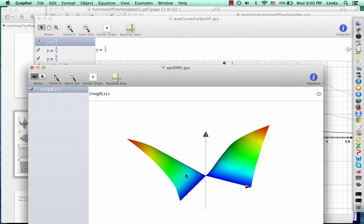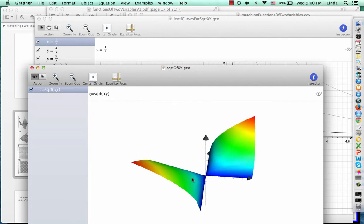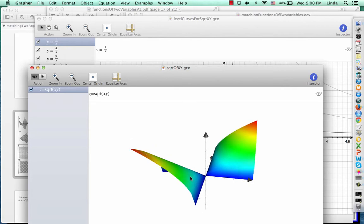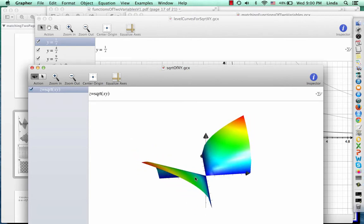which I've drawn here. I've used color to indicate height here. So red is higher and blue is lower. And this is what the graph of the function looks like.